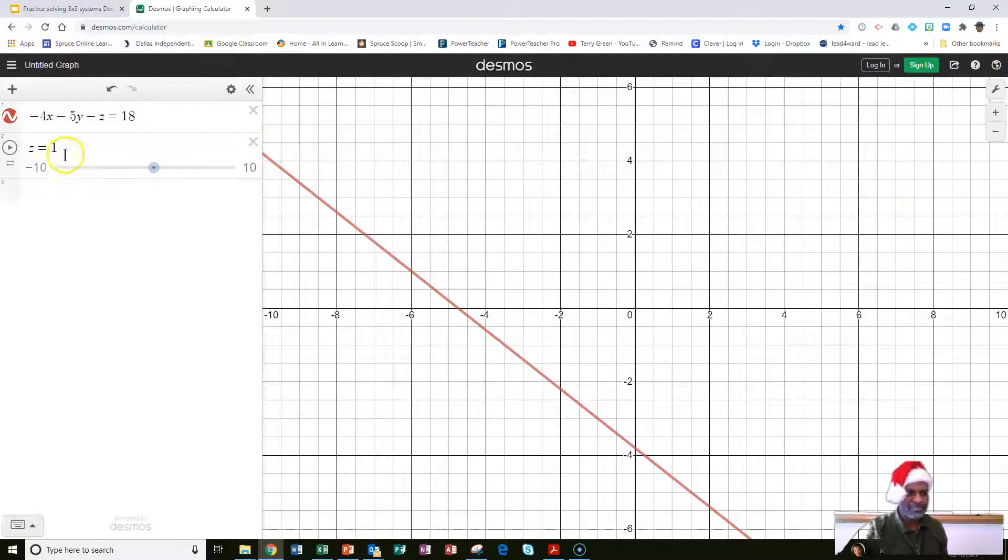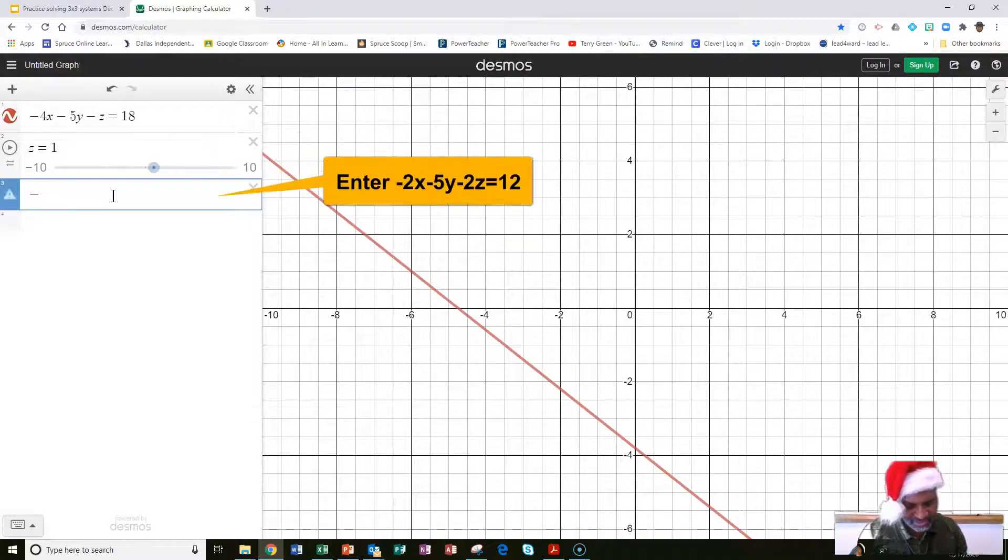We should get three lines and they should all intersect at a point. But you got to click on the slider so that we can see all three lines.